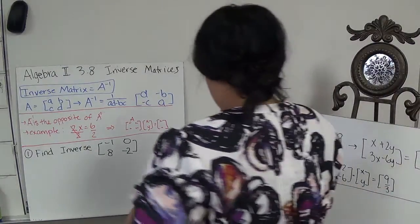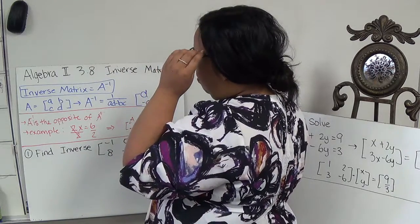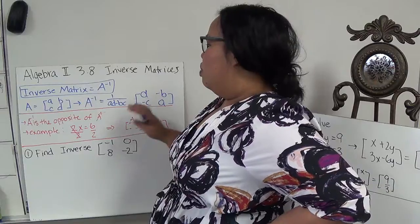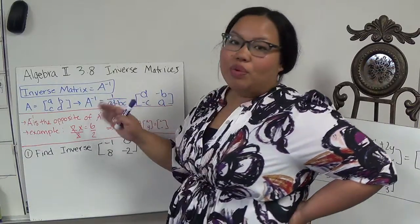In Algebra 2, Section 3.8, we're dealing with inverse matrices. So basically, what we're doing is we're trying to find the opposite of a matrix so that we can cancel it out.